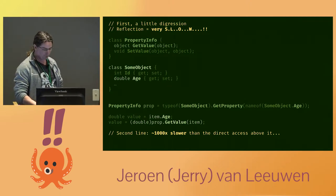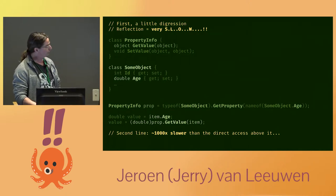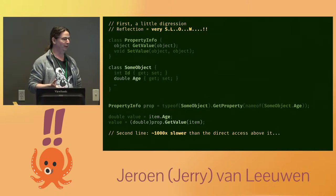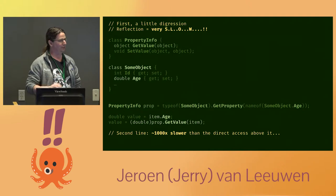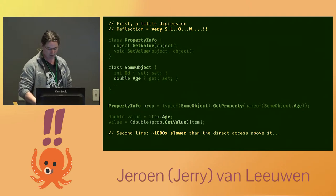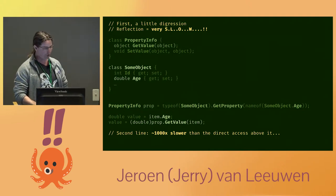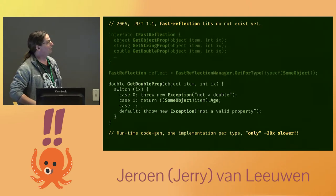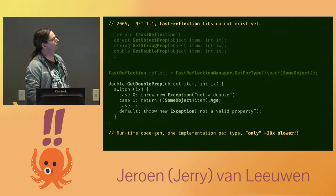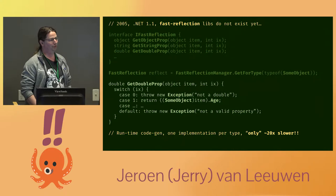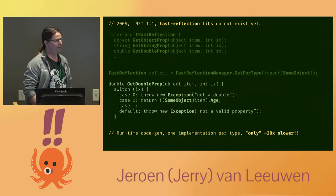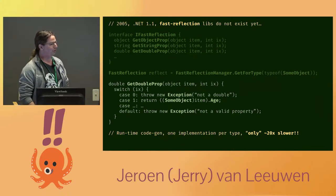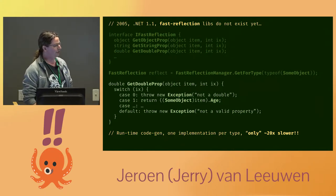To get to a reasonable performance for the reflection itself, we had to get to about a factor of 10 difference or so. My first approach was to basically create code-gen fast reflection myself, because there were no libraries available off the shelf yet that could do that.